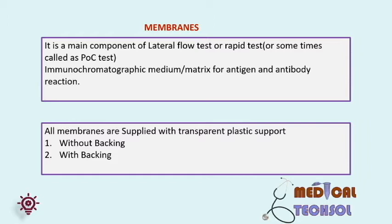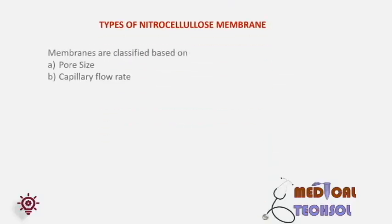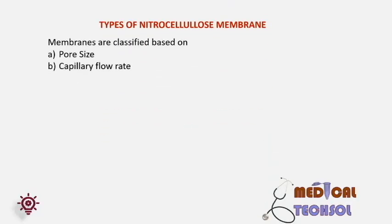Membranes are either supplied with laminated backing or without laminated backing. Laminated backing consists of non-transparent white plastic backing with membrane adhesive and release liners. Dimension and acceptable limits of the plastic backing must be specified. Nitrocellulose membranes are classified based on: number one, pore size; and number two, capillary flow rate. Membranes are porous in nature — they have tiny passages for filtration.